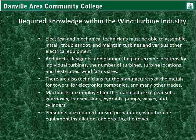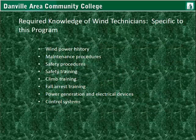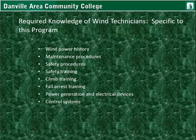Specific to this program, the required knowledge includes: wind power history, maintenance procedures, safety procedures, and safety training — knowing how to train new workers or coworkers on the requirements for safety. Also climb training — such as climb assist devices and fall arrest devices — and power generation electrical devices as well as control systems.